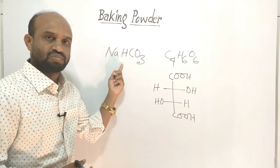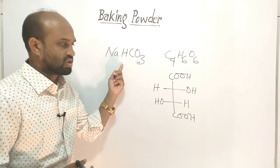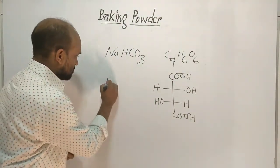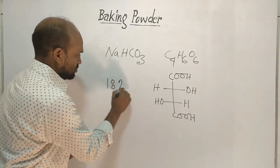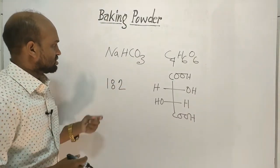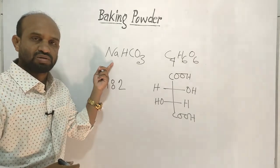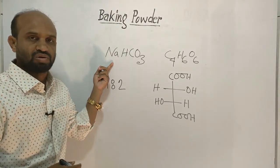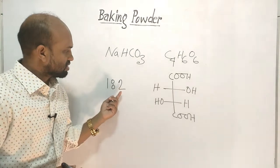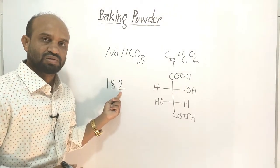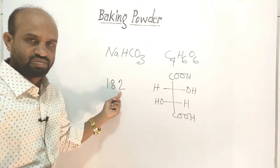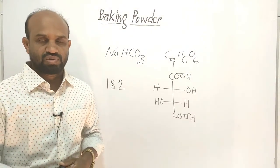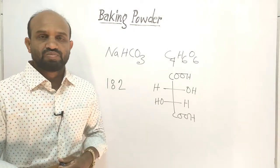Baking powder is a mixture of baking soda and tartaric acid at the ratio of 1 to 2 — that is, one part sodium bicarbonate (baking soda) and two parts tartaric acid. This mixture is known as baking powder.